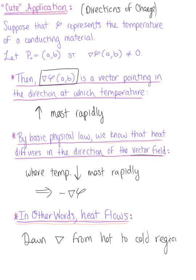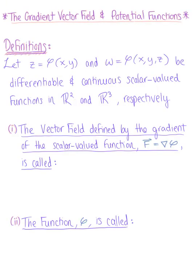We looked at this example briefly with directions of change and the gradient back in chapter 13. Now we're ready to officially define the gradient vector field and potential functions. Looking at these two definitions simultaneously...